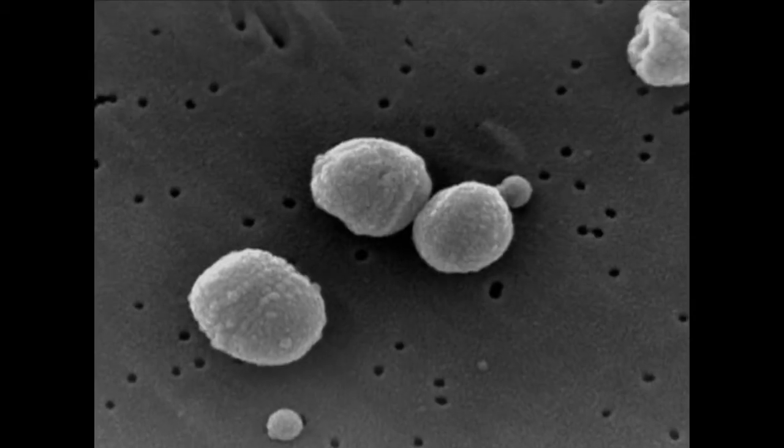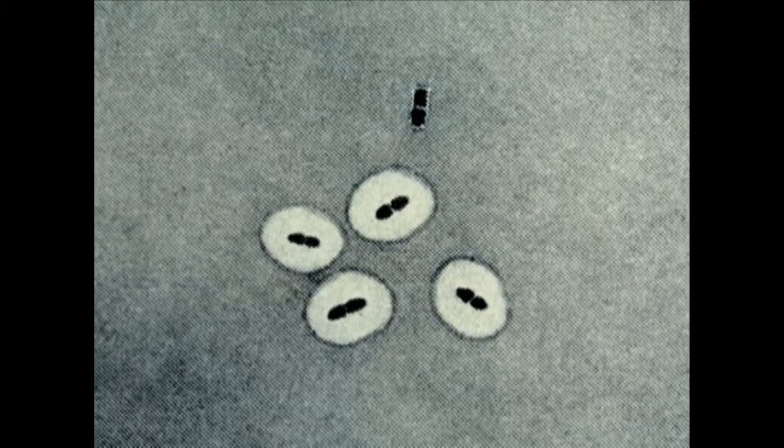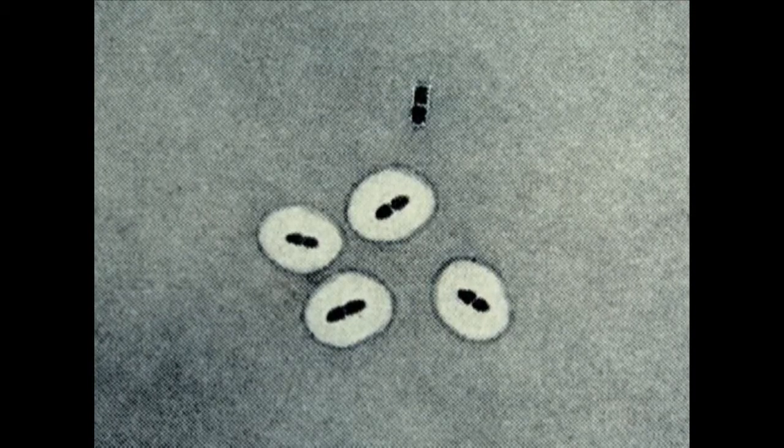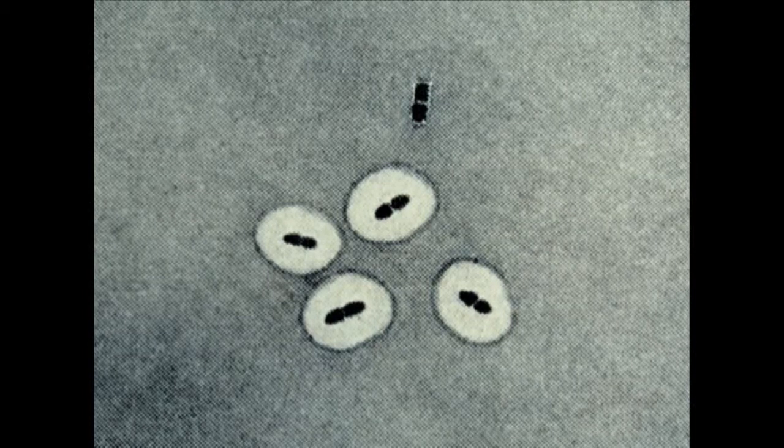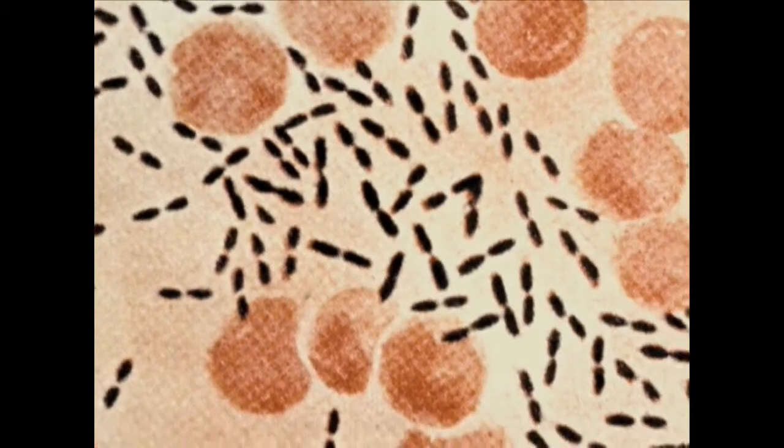His experiments centered around two strains of Streptococcus pneumoniae bacteria, the smooth and the rough. One strain of cell secreted a kind of slimy shell around its cell wall, giving its colonies a smooth appearance. The other strain had no such shell, so its colonies appeared rough.